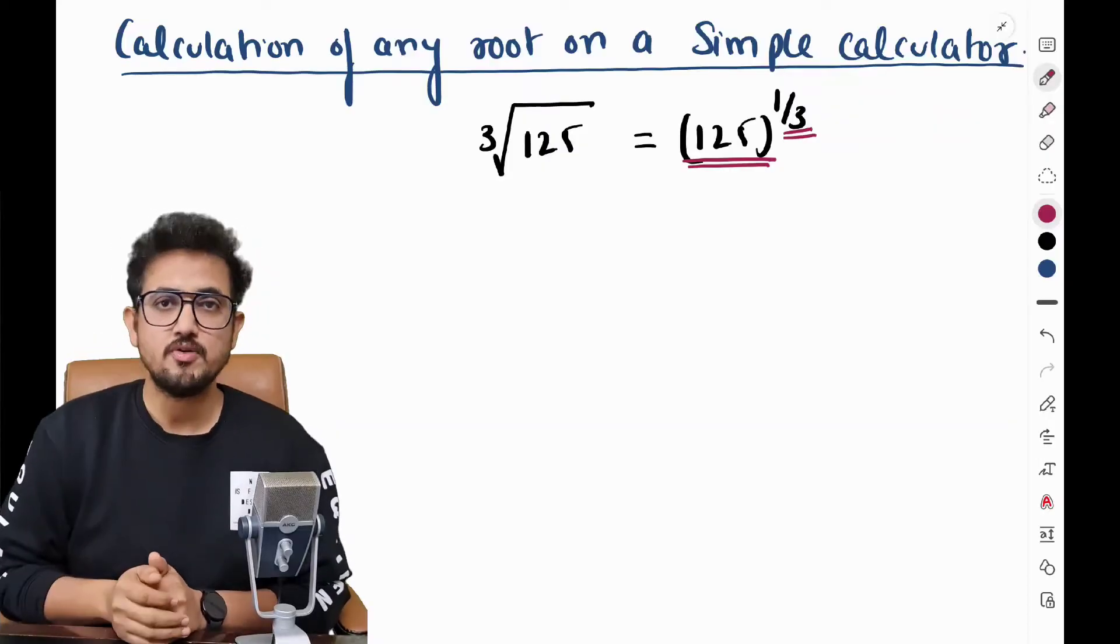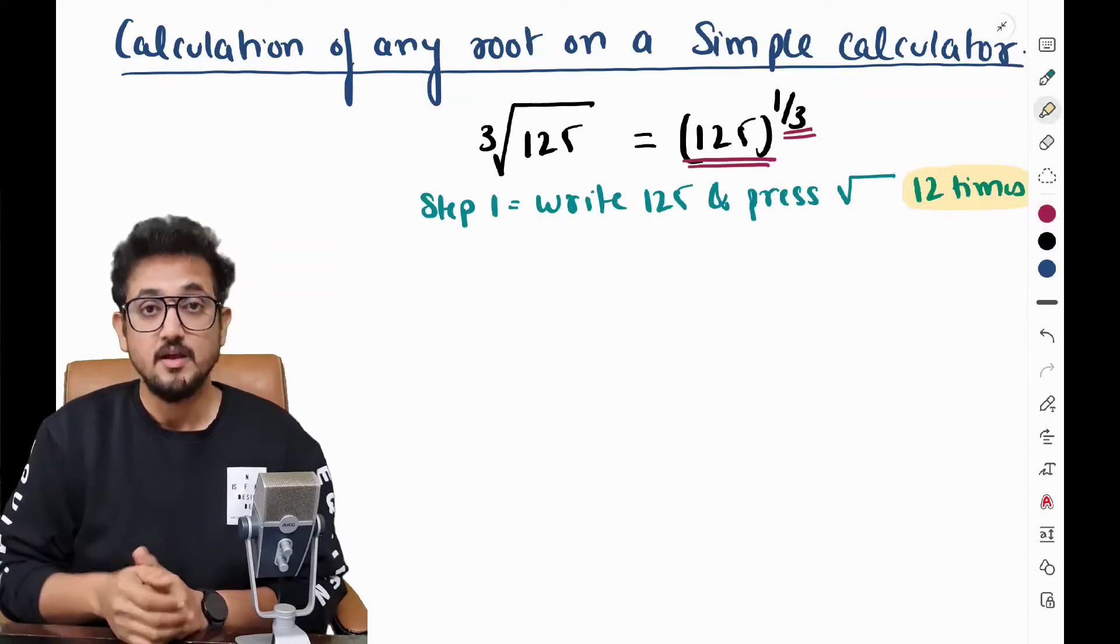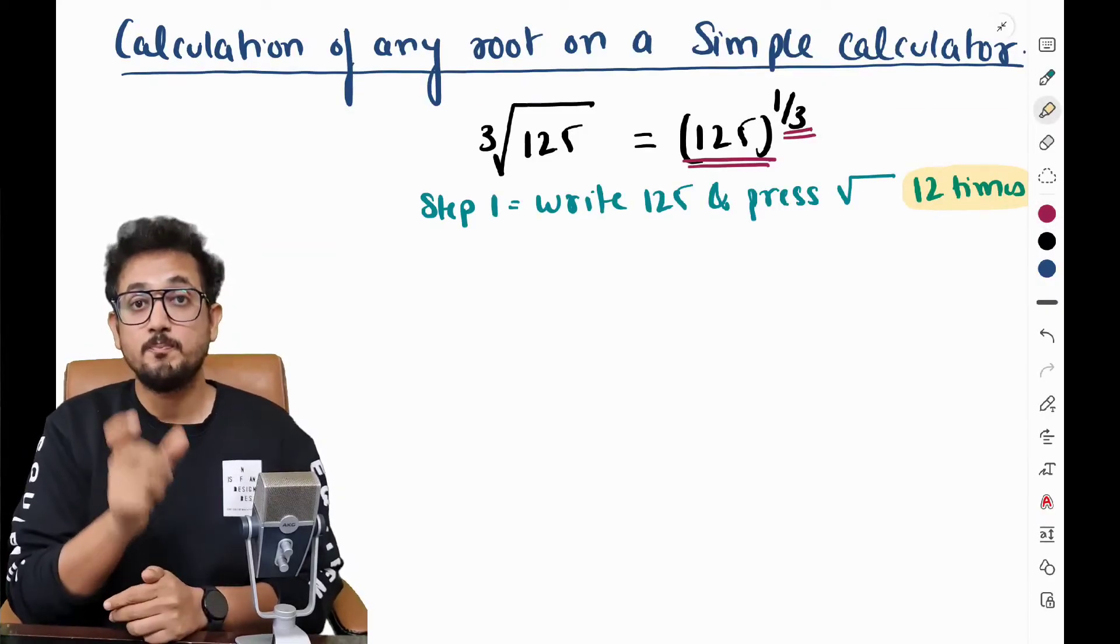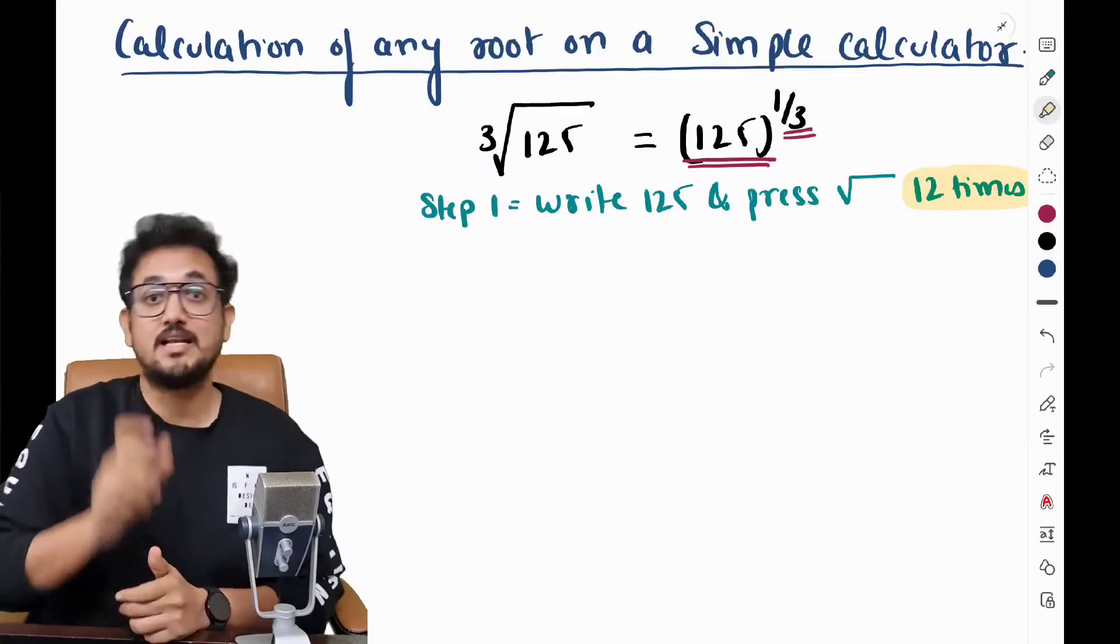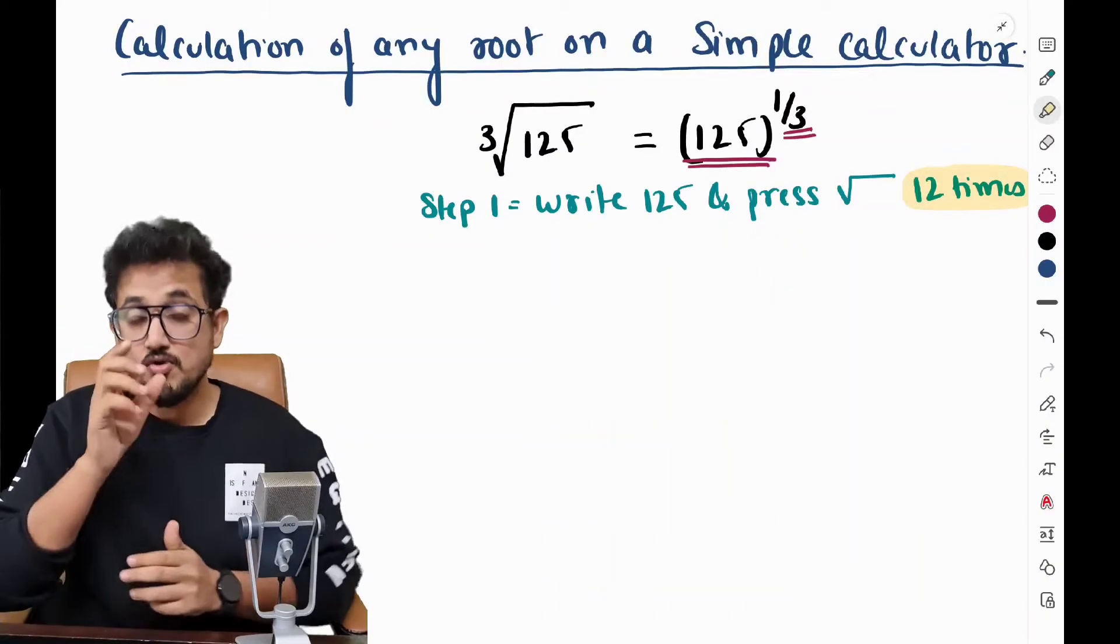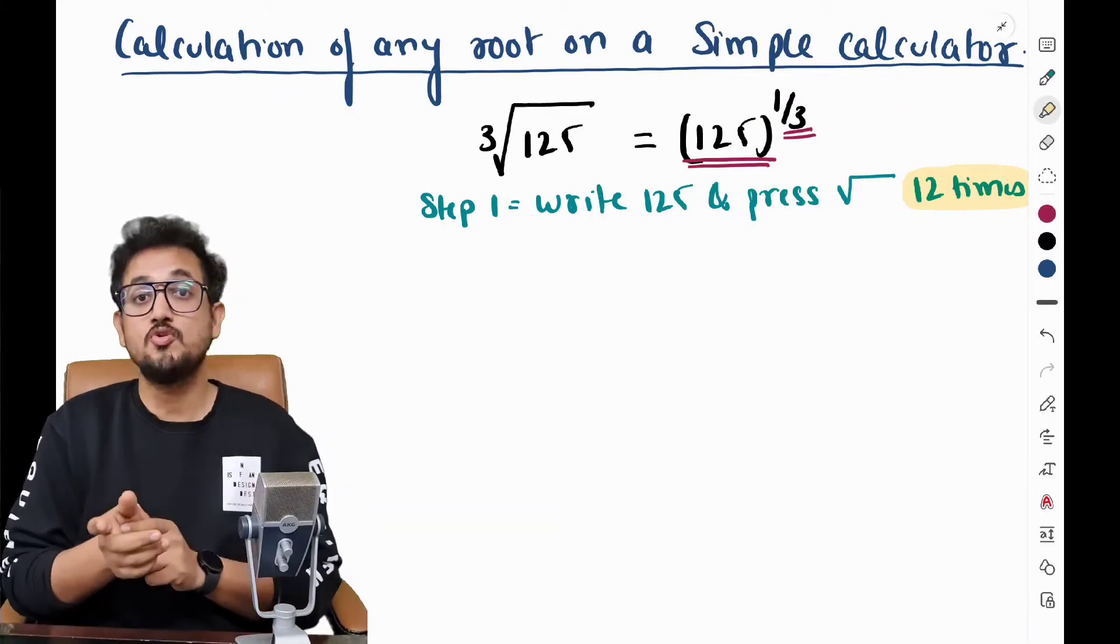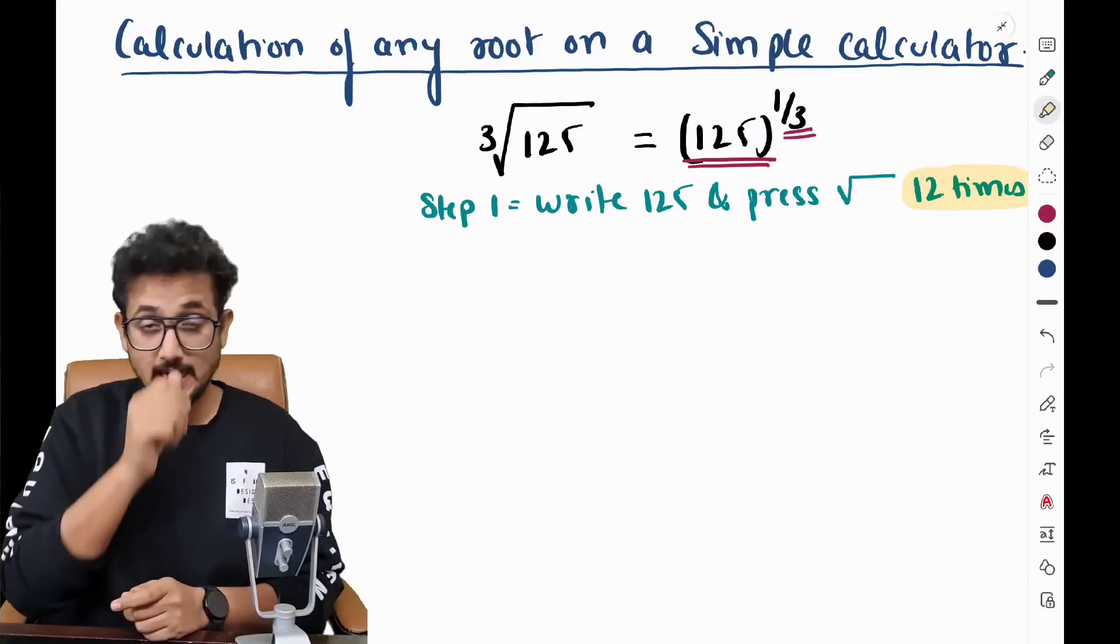So the first step that you have to follow in your simple calculator is you have to write 125, the number, and then you have to press root button 12 times. So this is a formula. You have to learn this formula. You have to press root button 12 times. So once you press the root button 12 times, you will get an answer. That is a figure.